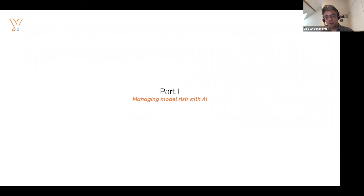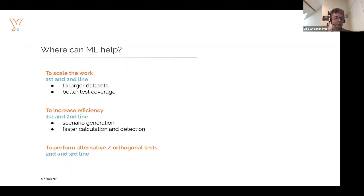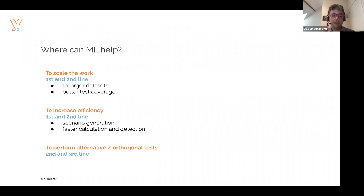Moving on to the first part of this talk, which is about managing model risk with AI. If you look at the different tasks relevant in model risk management, there are basically three different areas where machine learning can help. First, it helps to scale the work properly — scaling means more testing, more benchmarking, but also scaling to larger data sets. If you're building a liquidity model, you might have very large amounts of data and want to work at the individual client level, not just the aggregated part, which requires huge data sets.